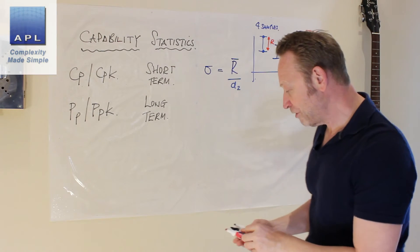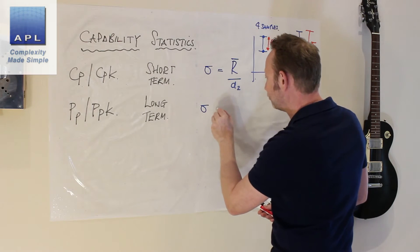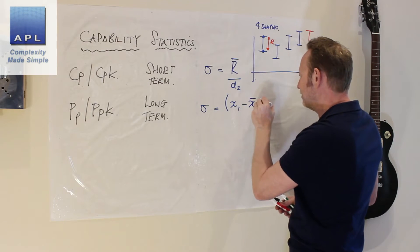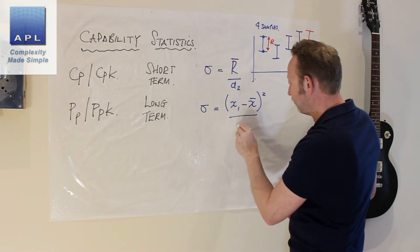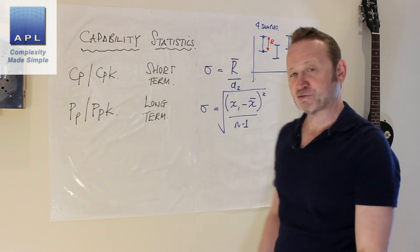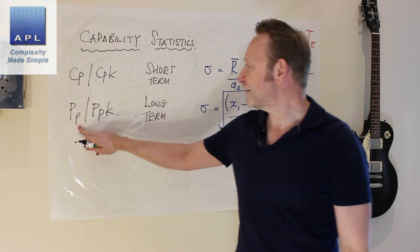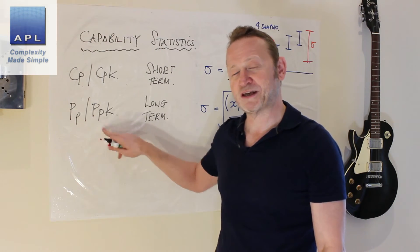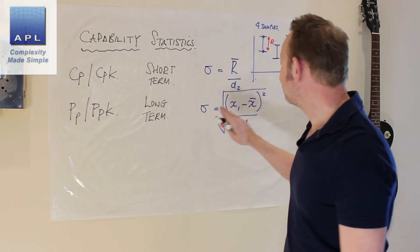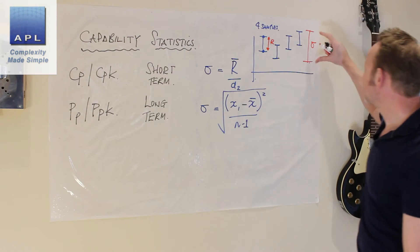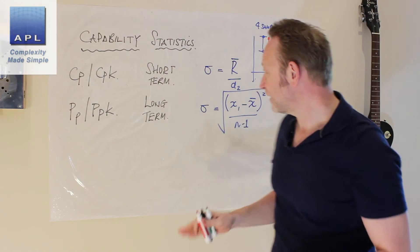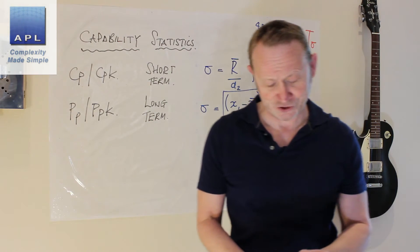Long-term, therefore, is the big standard deviation calculation: every data point, take away the average, square the difference, divide by the number of samples minus one, and take the root. That is how PP and PPK are worked out — and CP and CPK are worked out the same way. That's the long-term, because it takes into account everything that's going on. So those are the basic statistics.